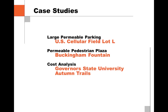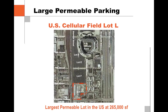A few years ago in fall 2007, they installed U.S. Cellular Field Lot L — at that time the largest permeable lot in the country. Buckingham Fountain is still probably the largest decorative plaza with permeable pavement, installed in fall 2008. Governor State has some interesting cost analysis that we'll talk about as well.